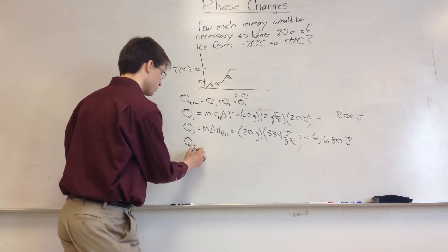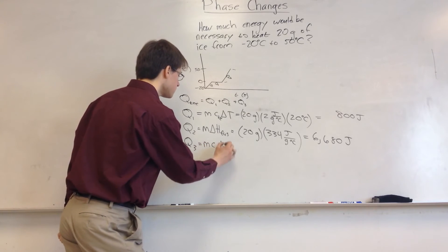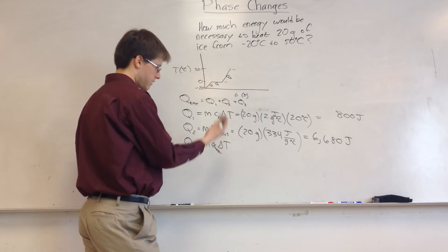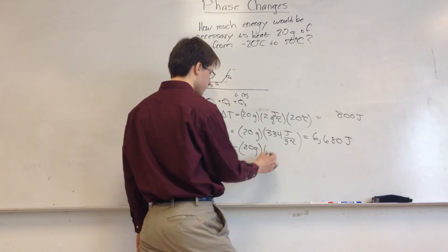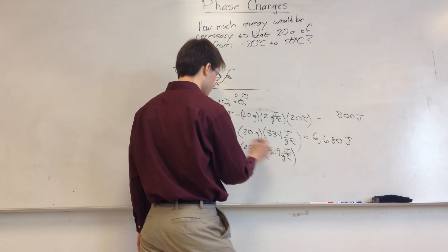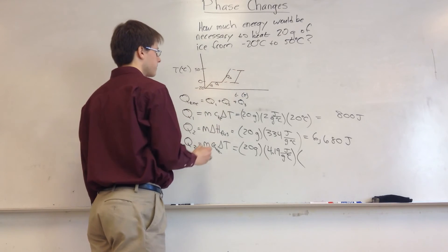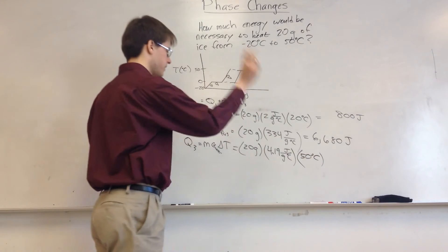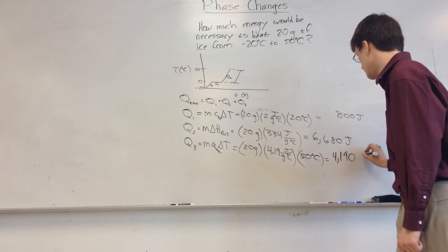Finally, Q3 — we're increasing the temperature again, so use MC delta T. This time C will be the heat capacity of liquid water. The mass is 20 grams. The heat capacity of liquid water is 4.19 joules per gram degree Celsius. We're only looking at the temperature change of this segment — from 0 to 50 — which is a change of 50 degrees Celsius. Multiply this together and you get 4,190 joules.